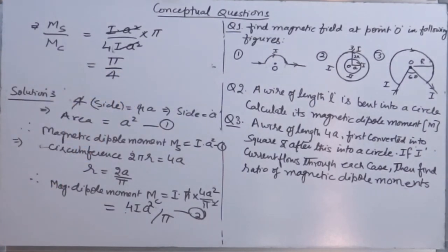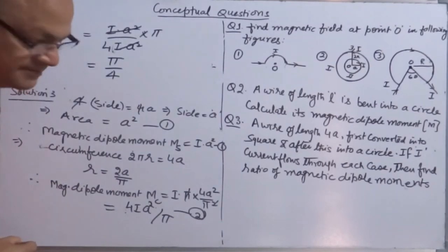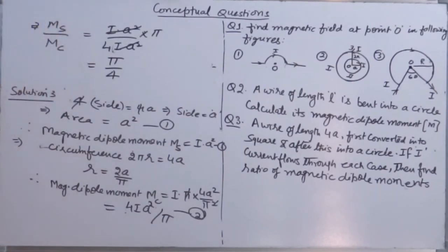It means the dipole moment of a square is greater than the circular coil because the ratio is coming less than 1.